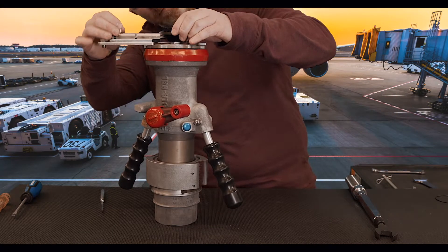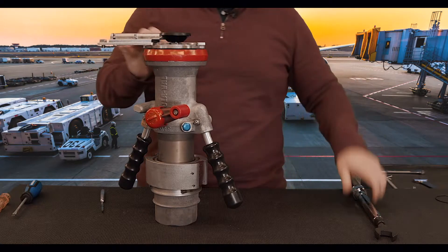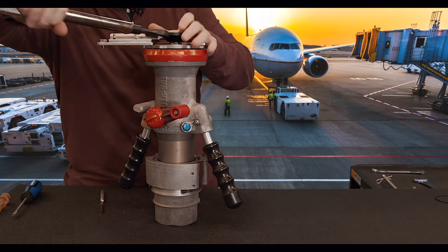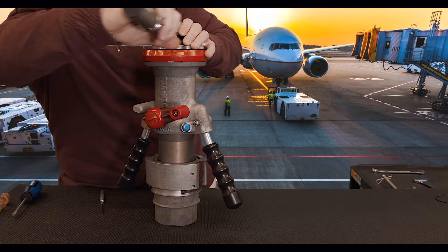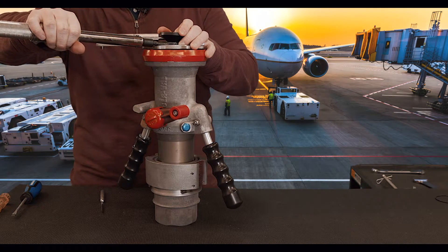So we're going to line our poppet back up, lock it in place, and then we can torque our swivel nut to the appropriate value.